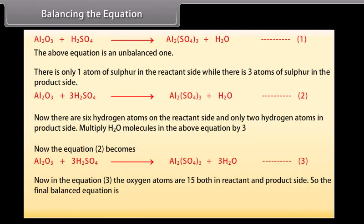Now the equation becomes Al2O3 plus 3H2SO4 gives Al2(SO4)3 plus 3H2O. The oxygen atoms are 15 both in reactant and product side. So the final balanced equation is Al2O3 plus 3H2SO4 gives Al2(SO4)3 plus 3H2O.